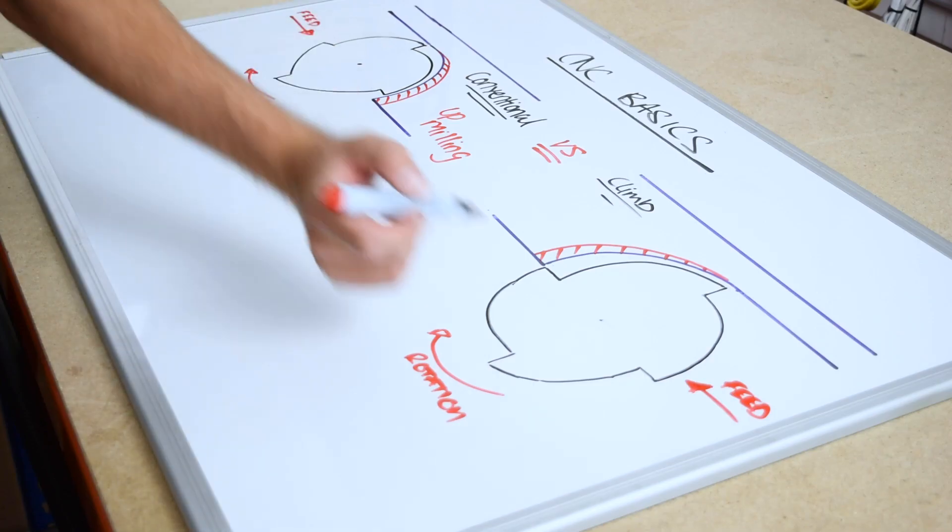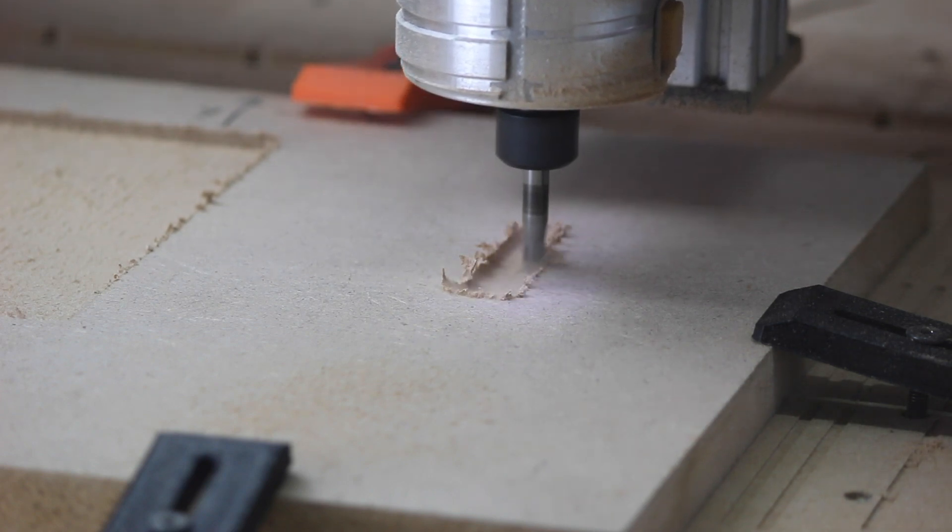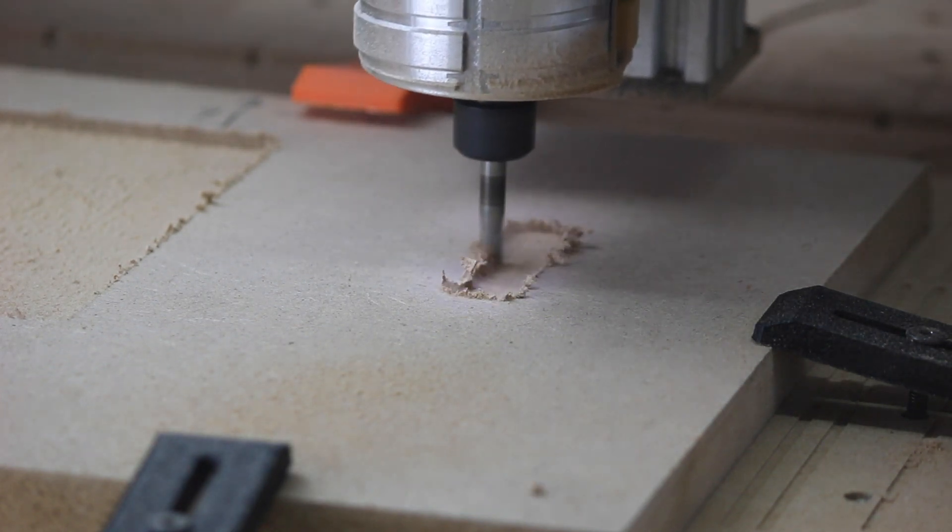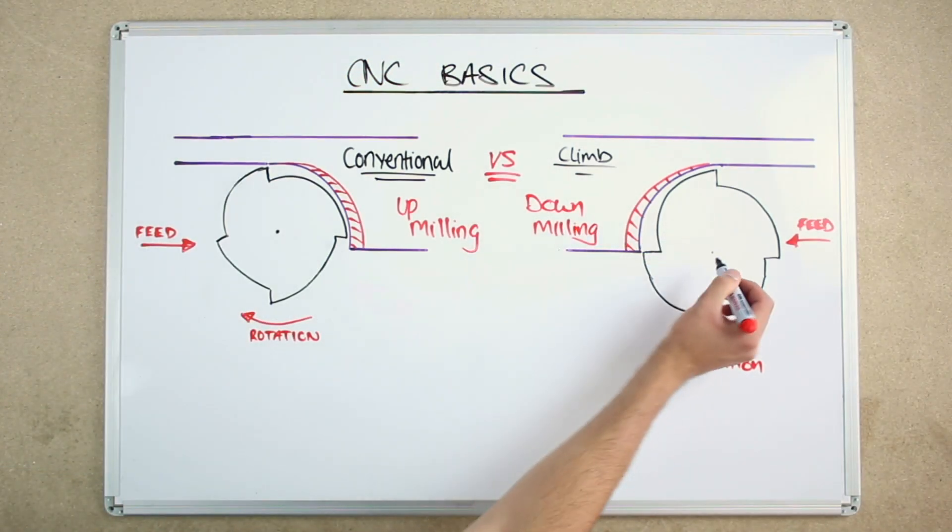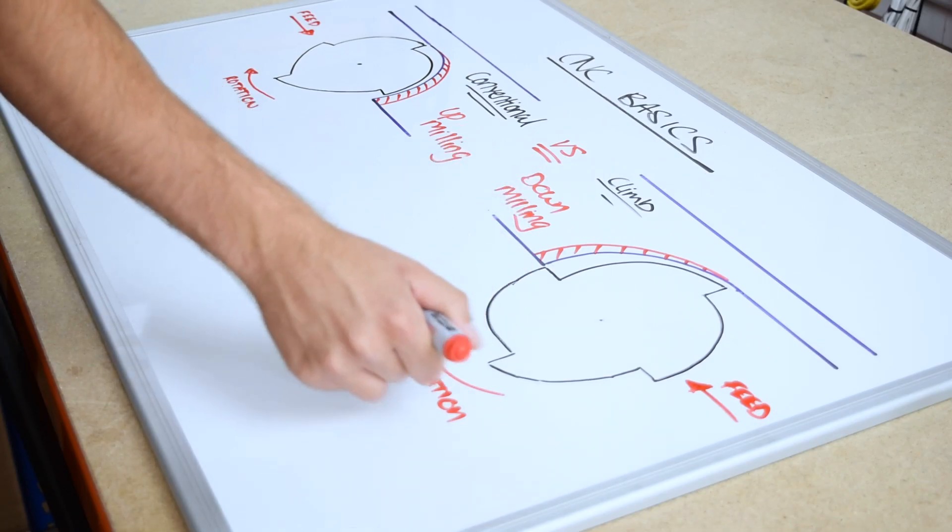With the end mill also rotating clockwise, in contrast, climb milling, also sometimes referred to as down milling, is when you are milling with the rotation of the end mill. Cutting a chip is pulling the end mill in the same direction to the feed.